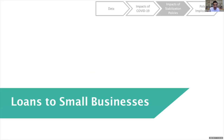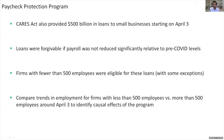The third major policy: the CARES Act provided about $500 billion in loans to small businesses starting on April 3rd. Those loans were forgivable if payroll was not reduced significantly relative to pre-COVID levels.